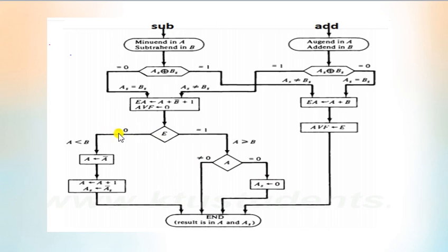In the next condition, E equals 0. So if A is less than B, we need to perform more steps. Here we need to find the two's complement of A because we have to perform B minus A operation, and then save the result like this.